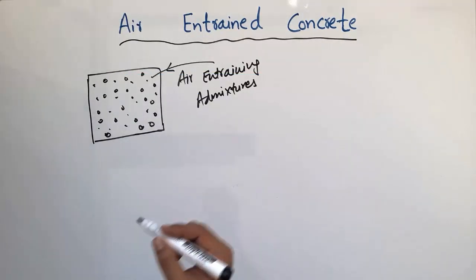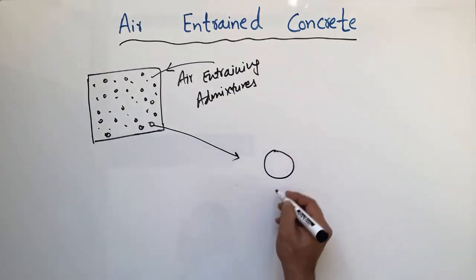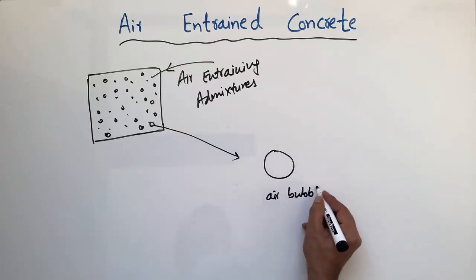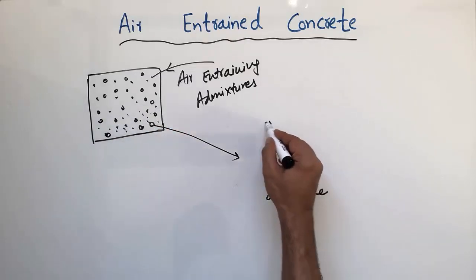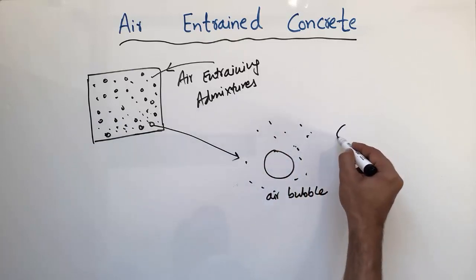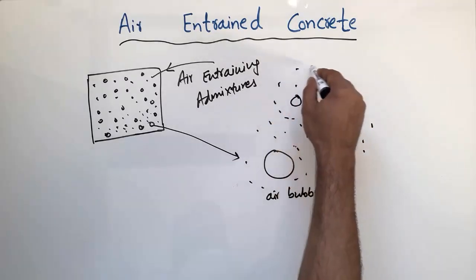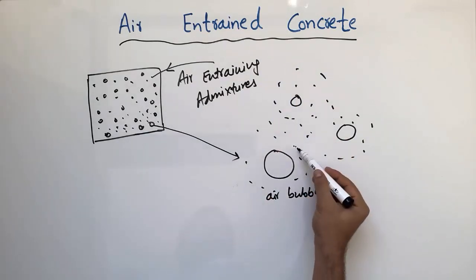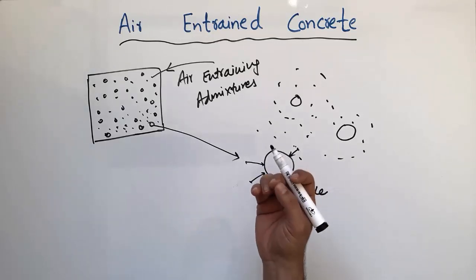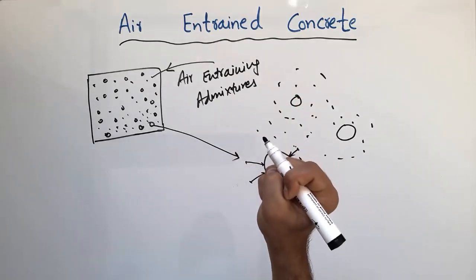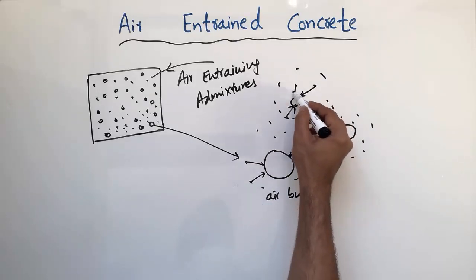Now I want to explain how these air bubbles help in resisting the freezing and thawing action. Consider an air bubble surrounded by water particles — there are thousands and millions of water particles around each air bubble. Similarly, there are other bubbles each surrounded by water particles. During freezing of the concrete, these water particles move into the air bubble, and the air bubble provides space to accommodate the water particles.